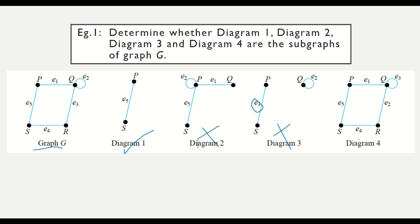For Diagram 4, PS is connected with H5, ER with E4, and QR with H2 — these are not correct. The loop is connected with H3, so there are two parts which are incorrect, meaning Diagram 4 is not a subgraph.